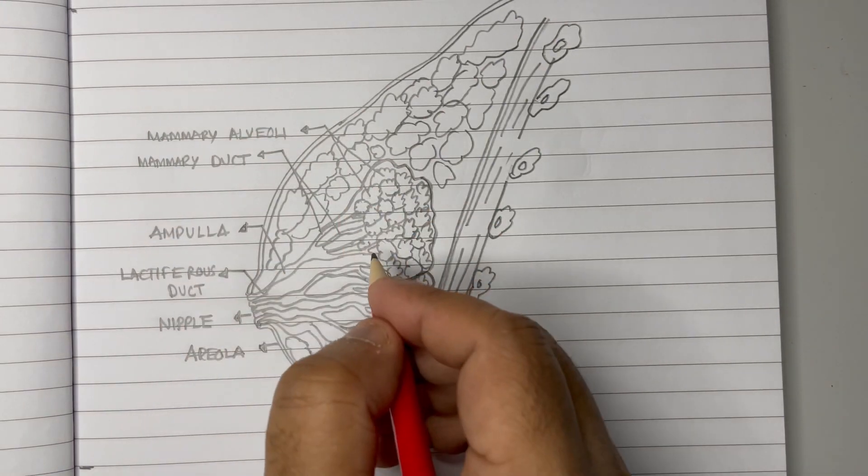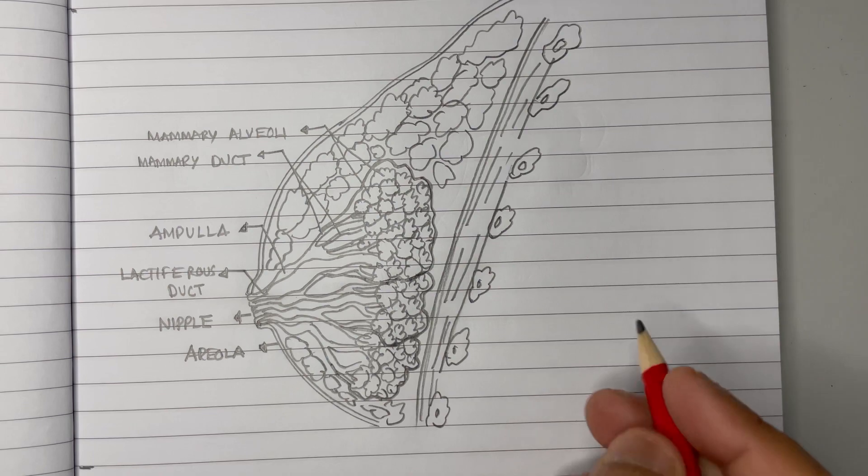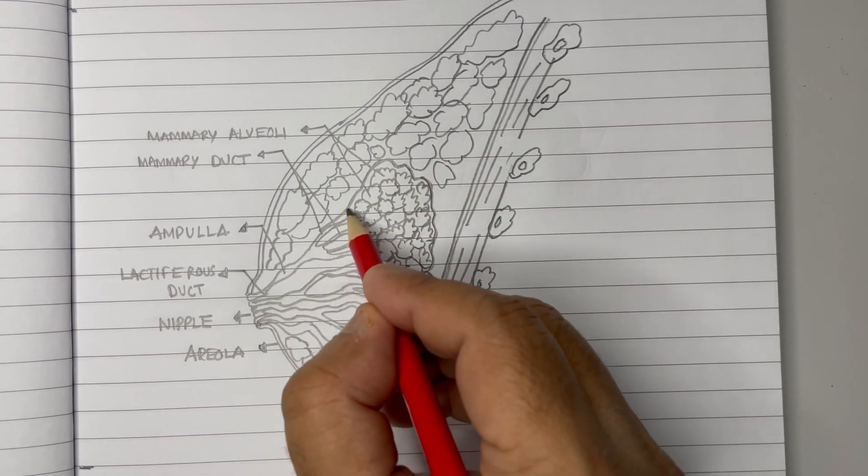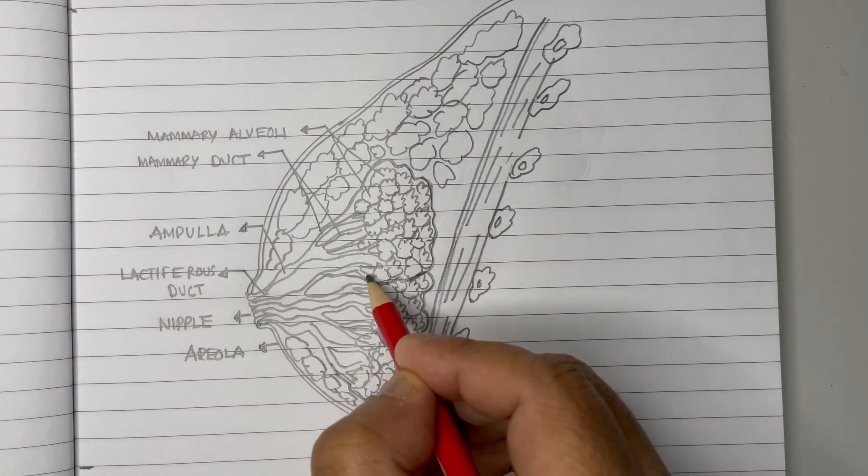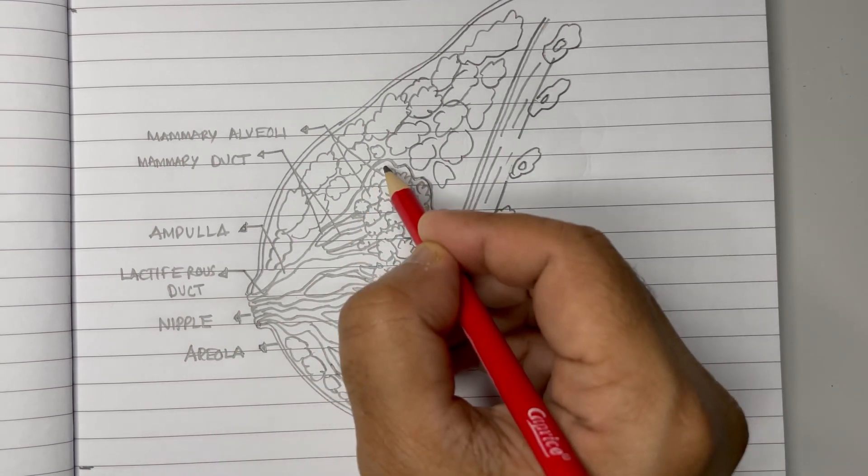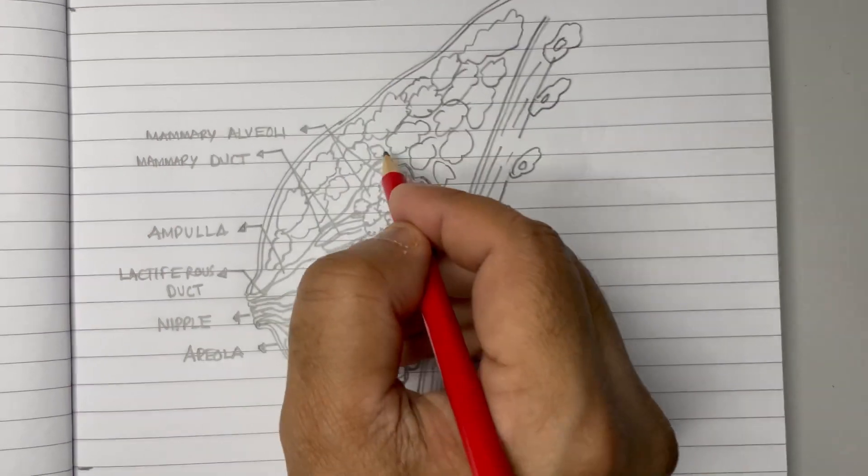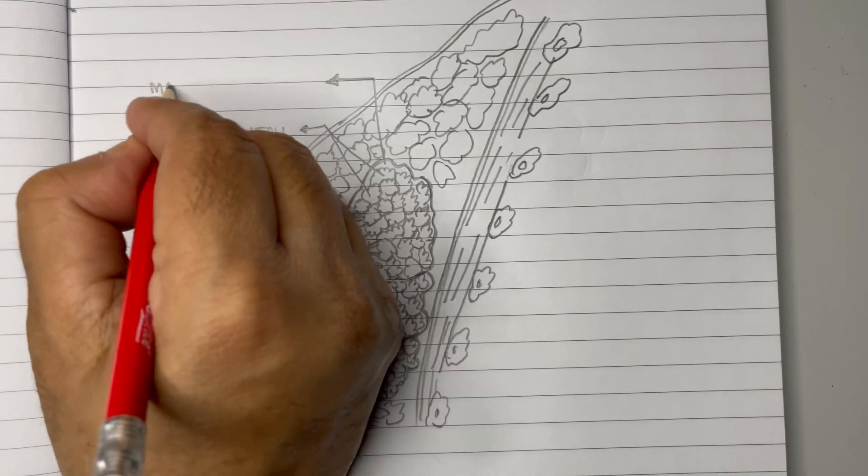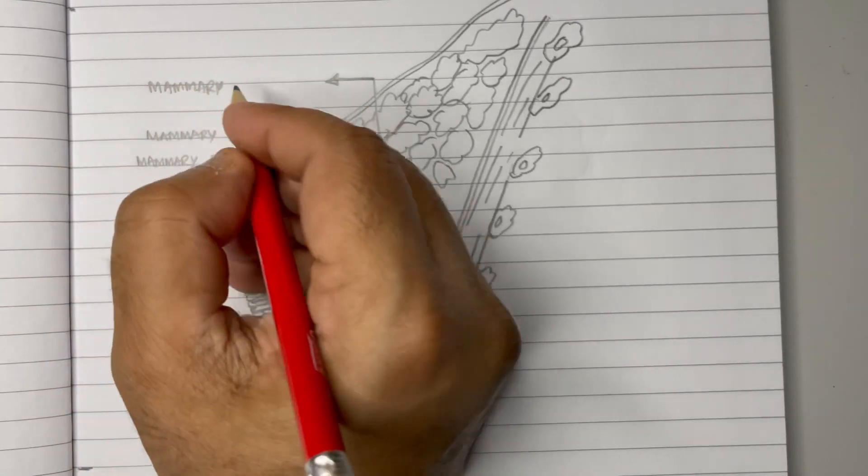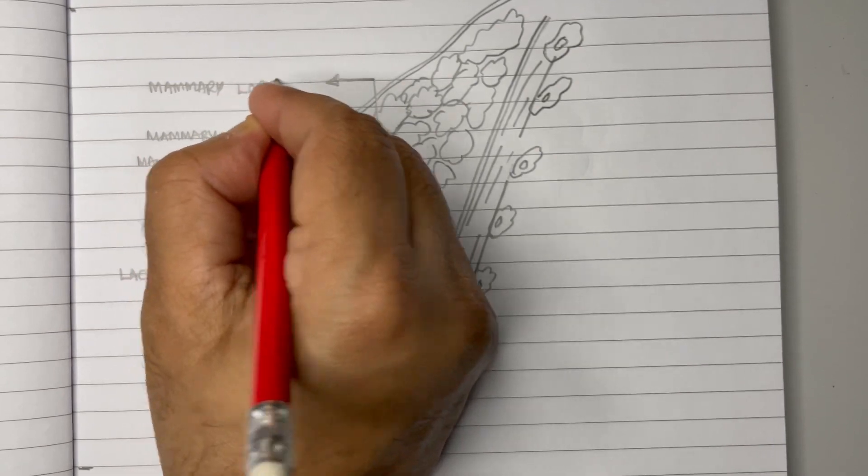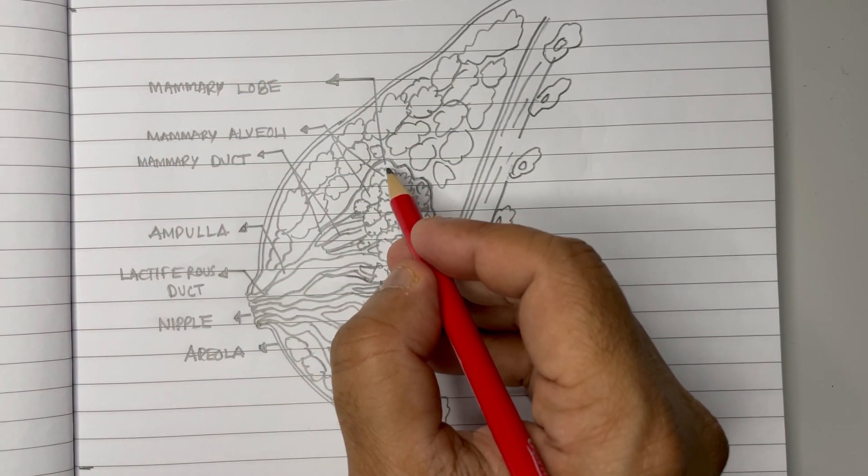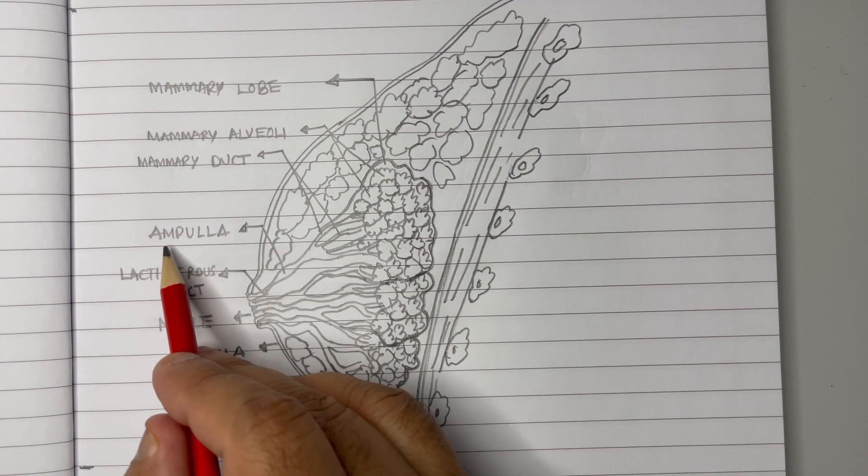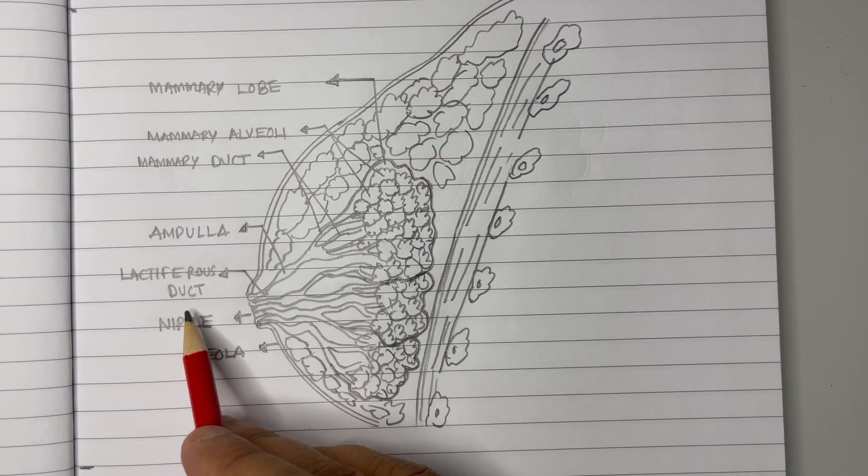After mammary alveoli, we notice that mammary alveoli is actually kept inside a bunch of tissue. This full sheet is called the mammary lobe. So here we can mark as mammary lobe. It starts from the lobe, then to alveoli, then to duct, then ampulla, then lactiferous duct.